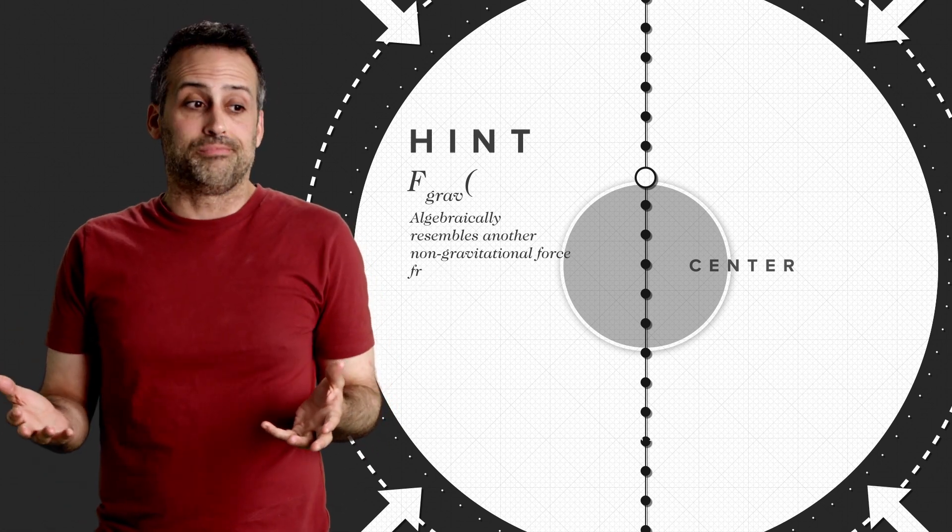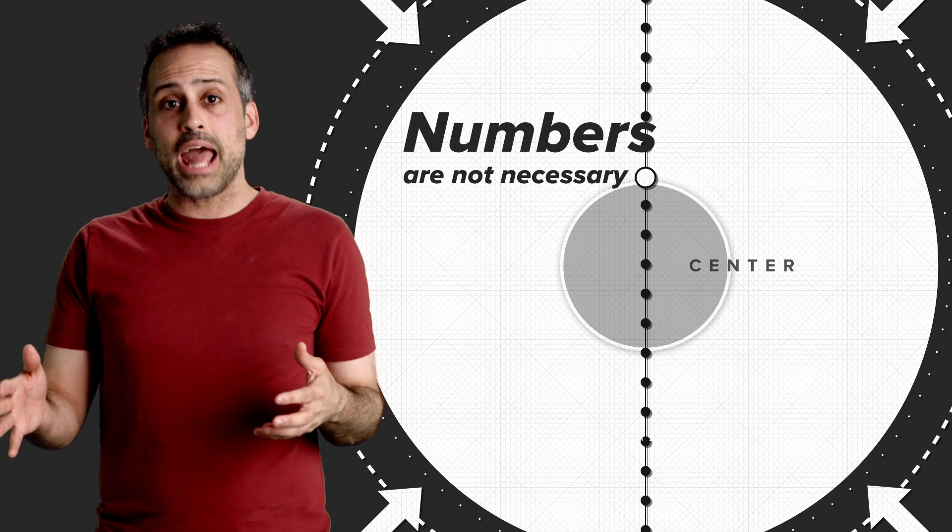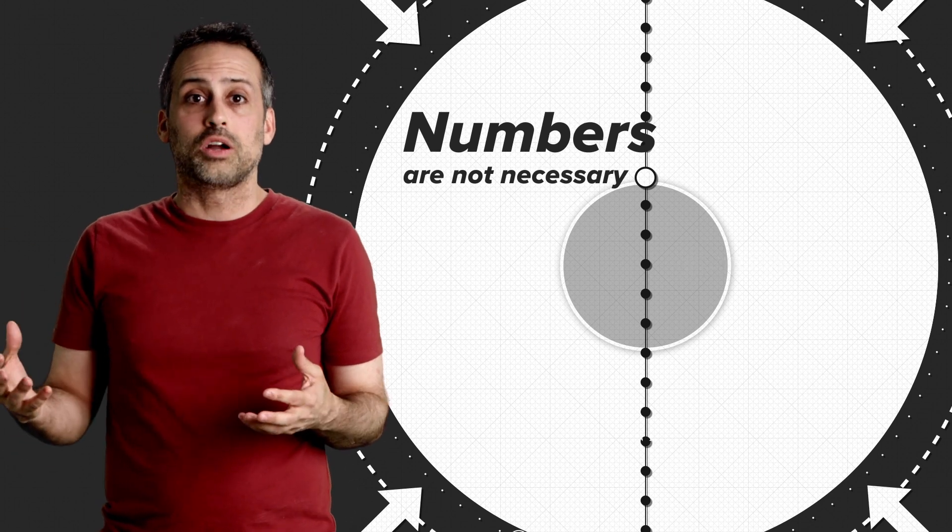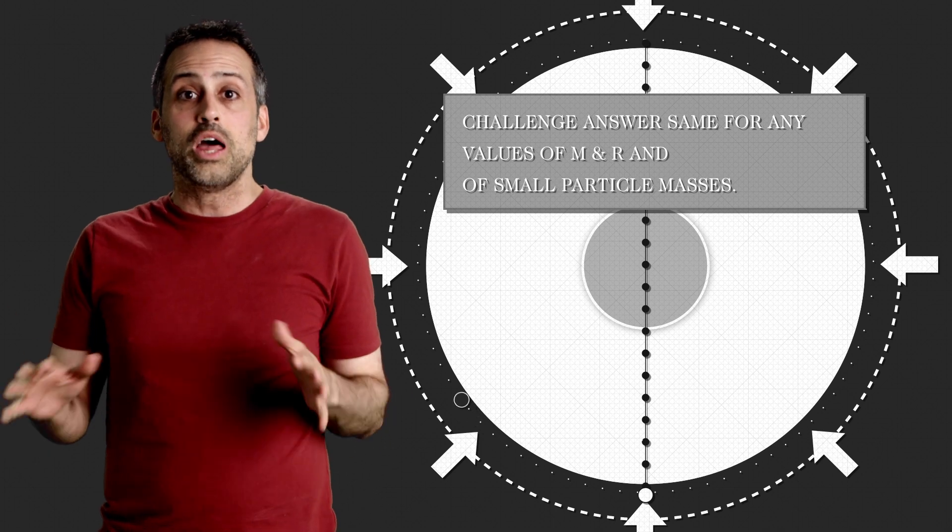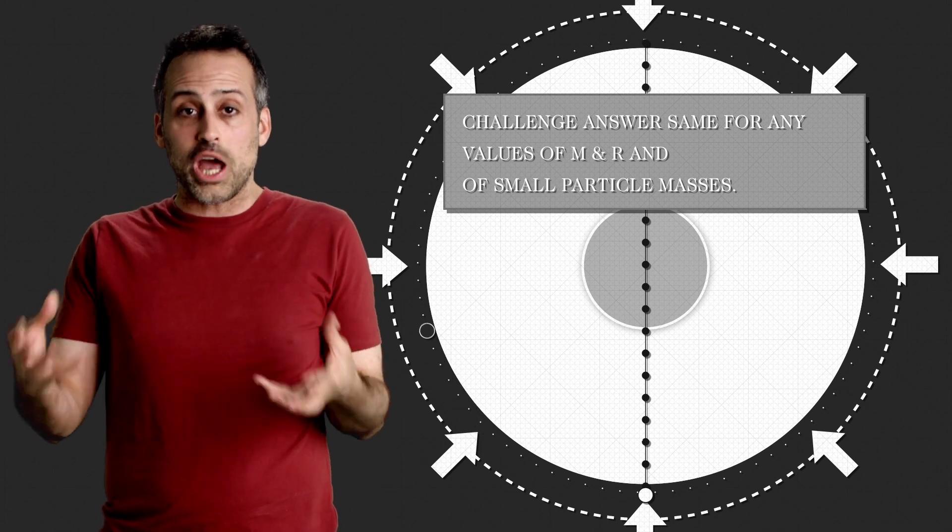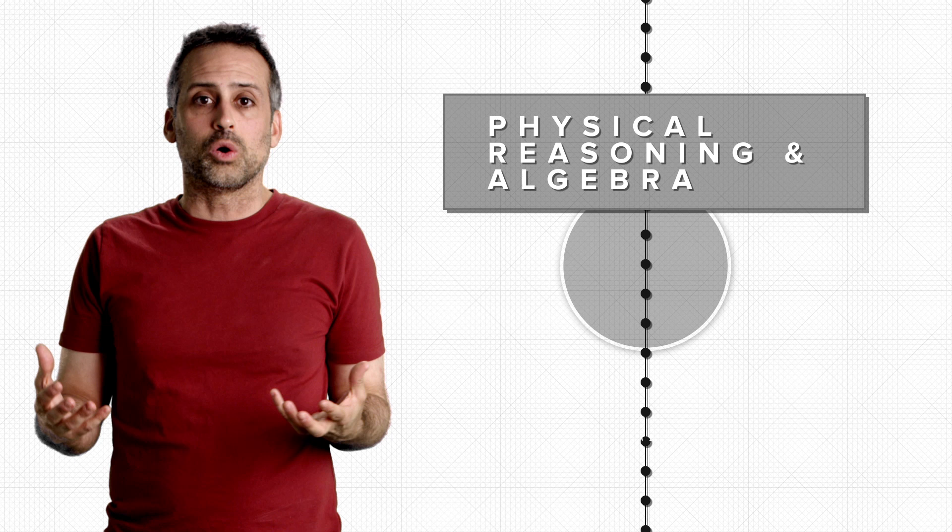You'll notice I haven't given you any numbers, and that's because you don't need them. The answer to which particle wins the race comes out the same regardless of the mass and radius of the planet or of the masses of the two particles. The point is to figure out the general answer through a combination of physical reasoning and algebra.